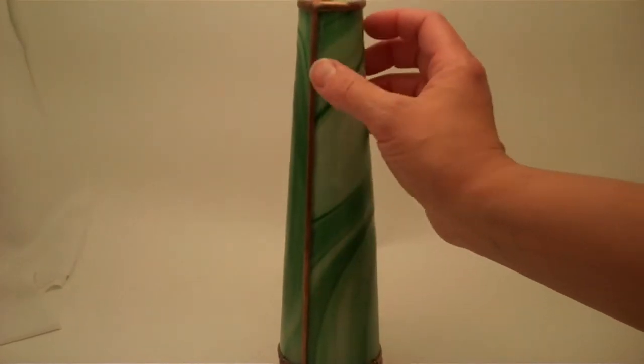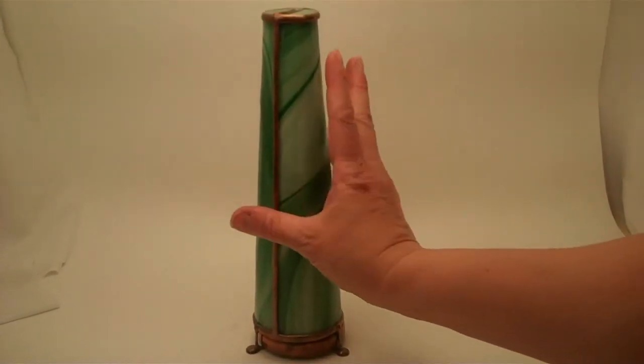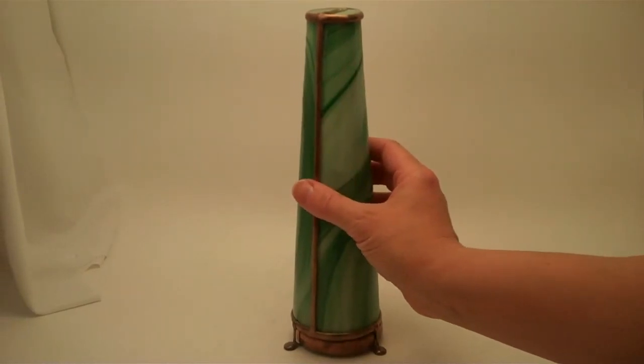The cone itself is two pieces of stained glass in a beautiful green and white swirl that are slumped in the kiln to create the cone shape.